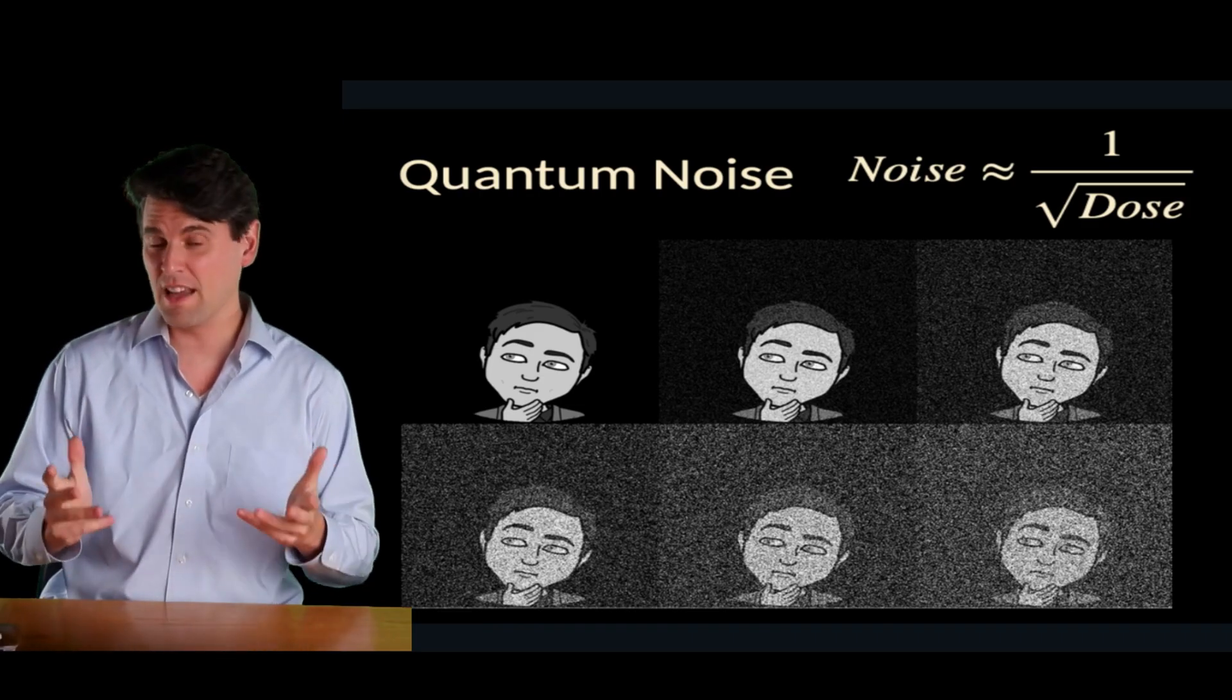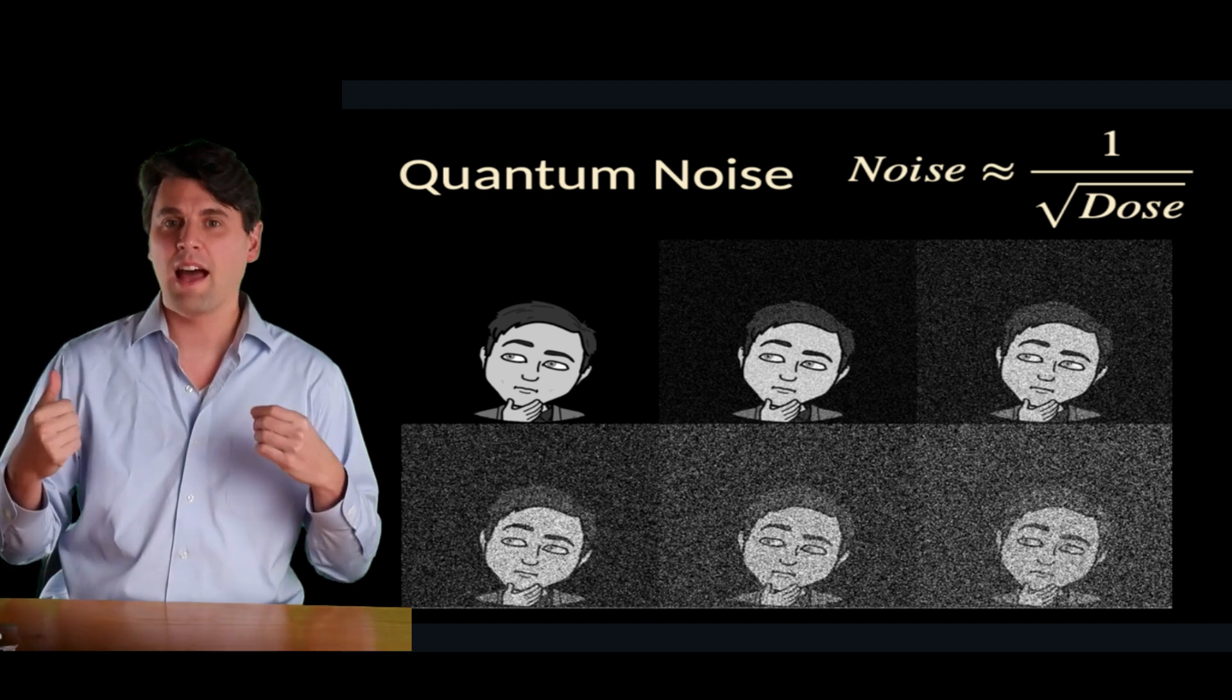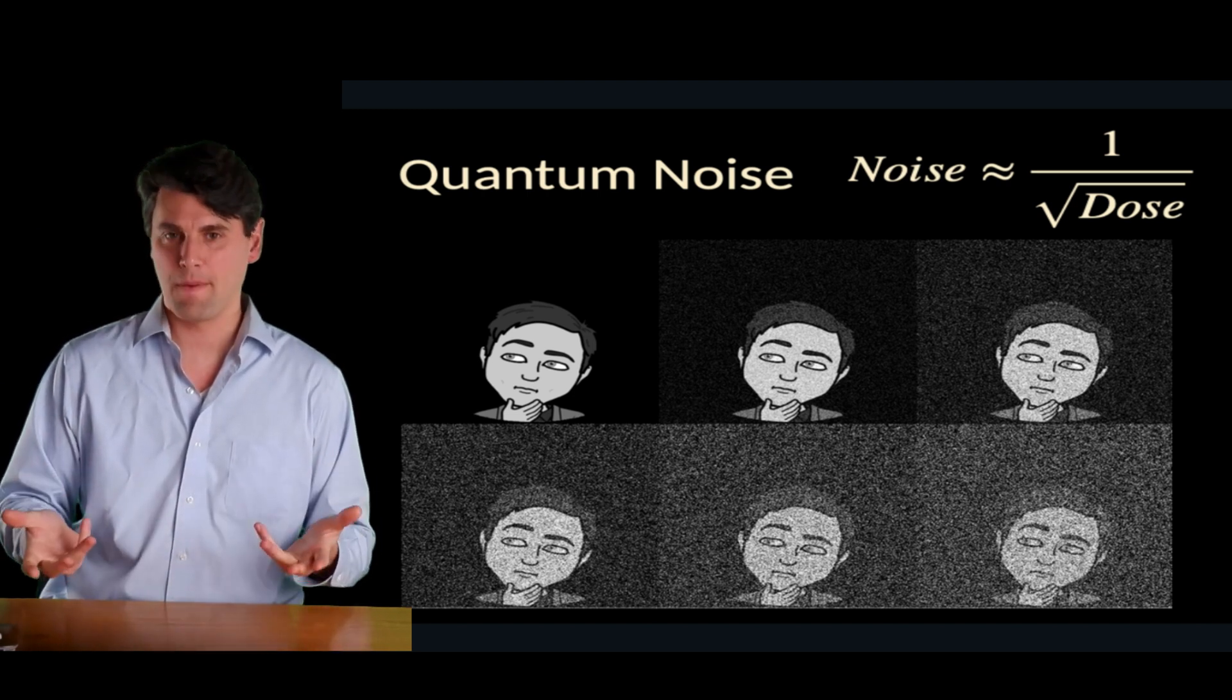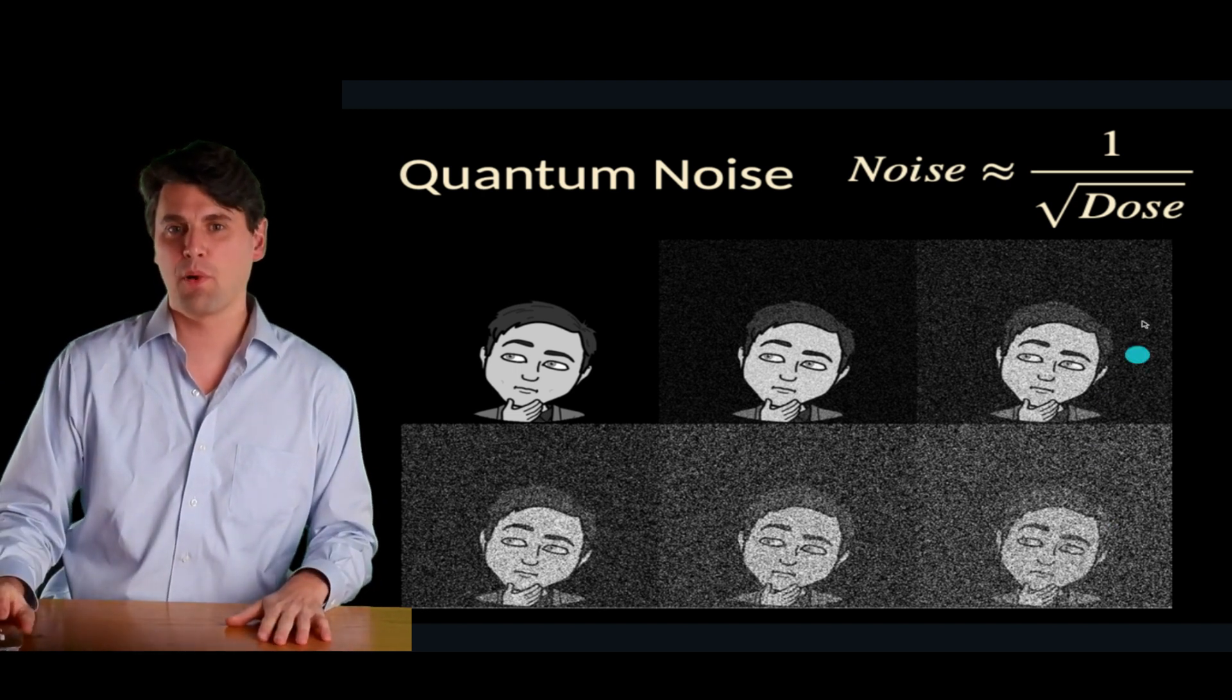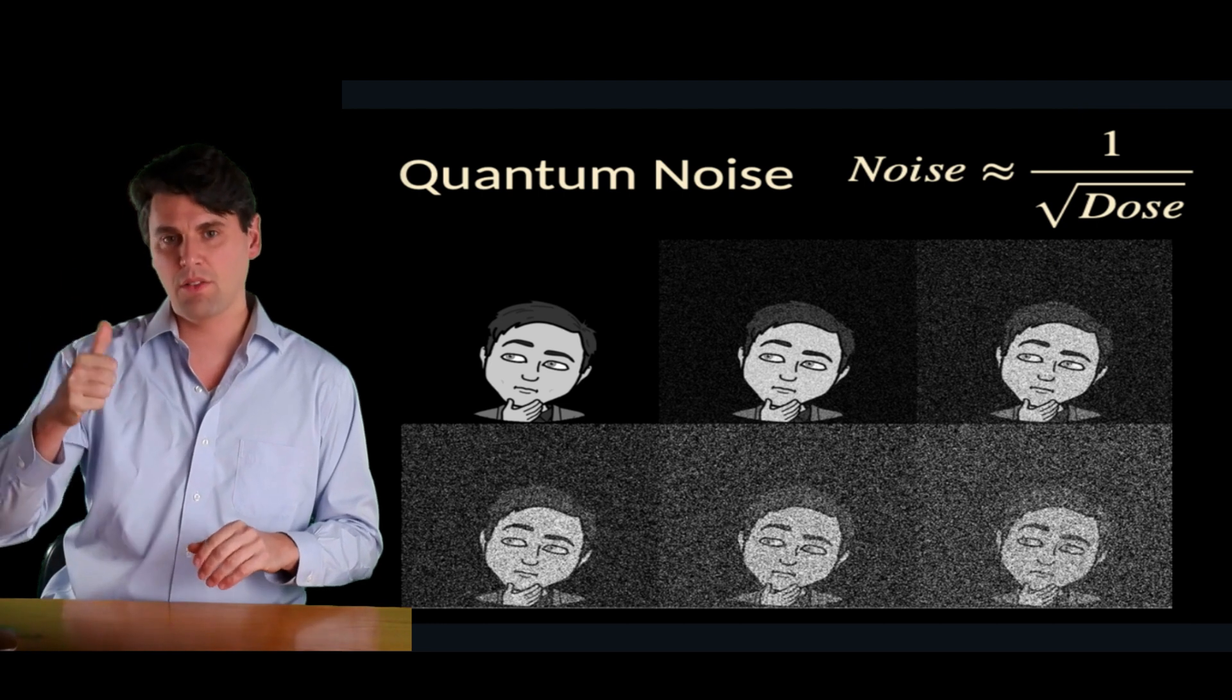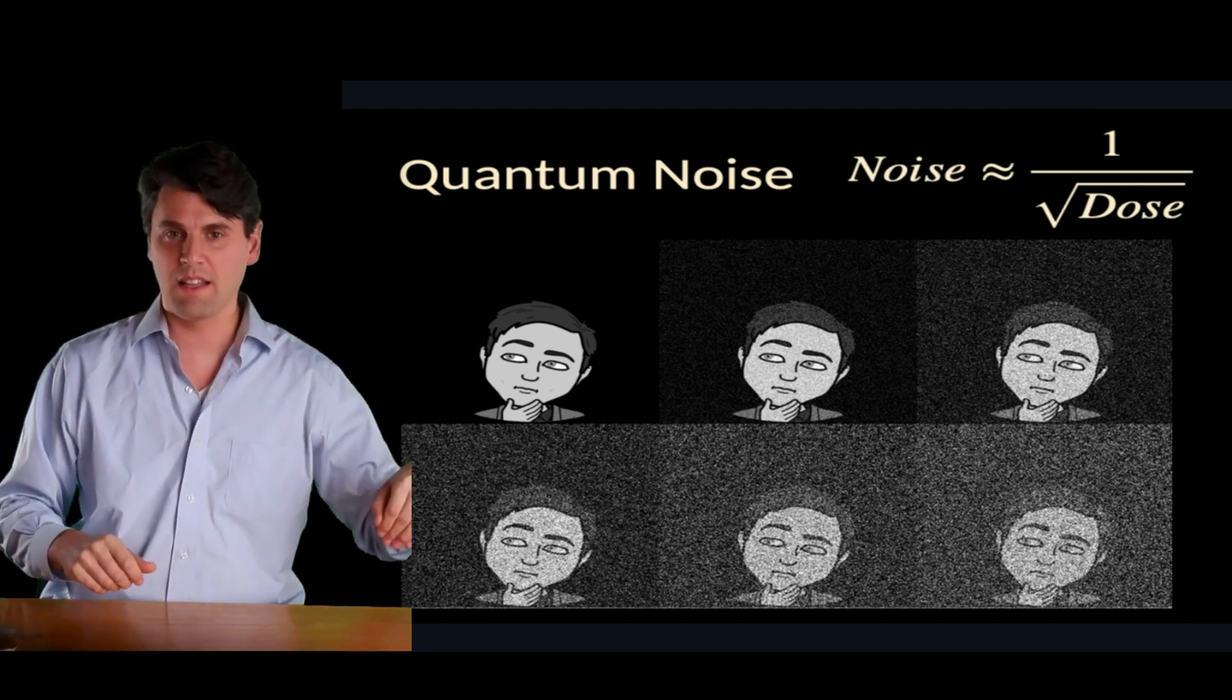The relationship we'll cover in more detail in other videos, but as the dose goes up, the noise is going to go down. So you can see here in this proportional relationship, the noise goes inversely like the square root of the dose. So as the dose continues to go up, the noise is going to continue to go down.